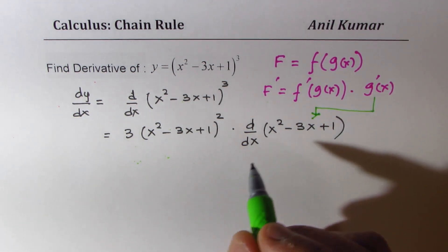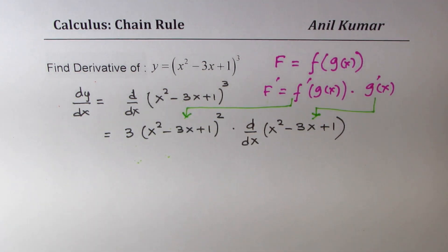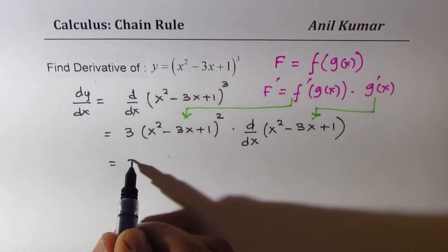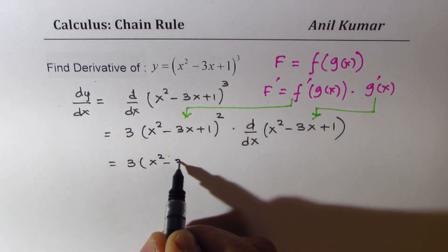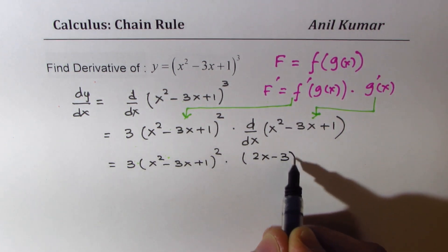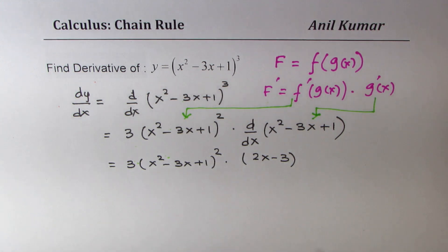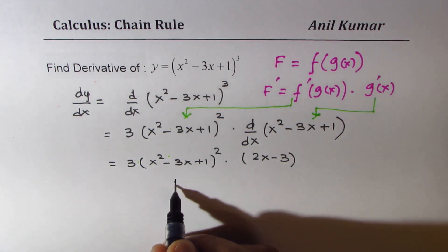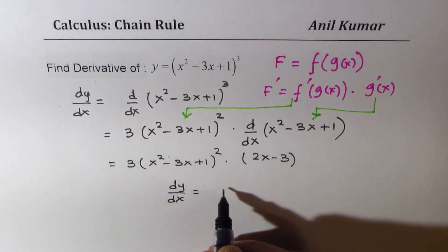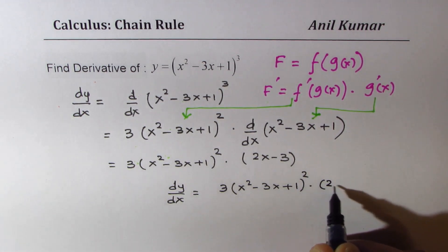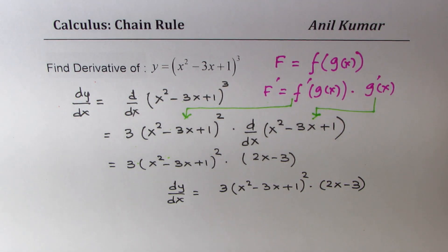So continuing, we get dy/dx equals 3 times (x² minus 3x plus 1)² and the derivative of the inside function is 2x minus 3. We found the derivative of the outside function times the derivative of the inside function. So dy/dx equals 3(x² minus 3x plus 1)² times (2x minus 3).